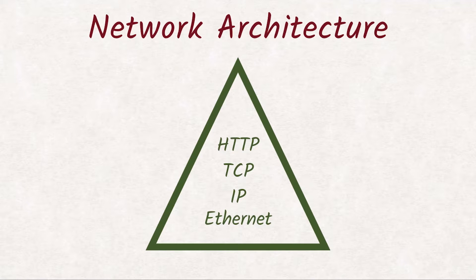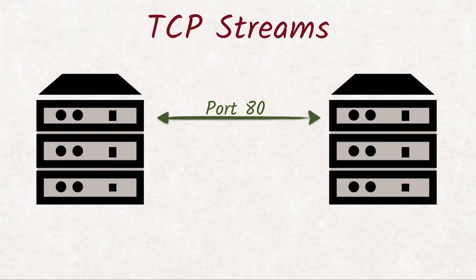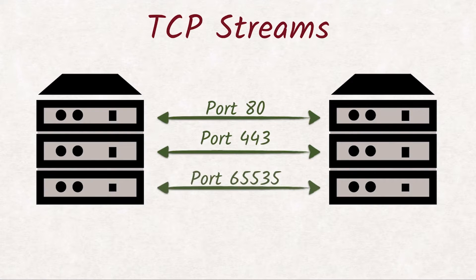The point is, we don't need to understand each of these layers, but TCP in particular has a big impact on how we should structure our requests to have them perform well, and it warrants a closer look. The Internet Protocol allows us to talk to other machines on the Internet, while TCP allows us to have multiple independent streams of data between these two machines. These streams are distinguished by port numbers. TCP also ensures that no packets get lost and that they arrive in the right order.